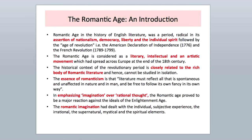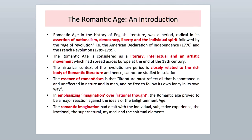The essence of Romanticism is that literature must reflect all that is spontaneous and unaffected in nature and in man, and be free to follow its own fancy in its own way. In emphasizing imagination over rational thought — which is what the Romantic ideal was all about — the Romantic Age proved to be a major reaction against the ideals of the Enlightenment Age. In the Enlightenment Age there was much more focus on rational thought, reason, empirical reasoning, and logic. But now, it was the imagination, the fancy, the dream-like stuff of our imagination, which was gaining importance.